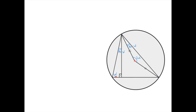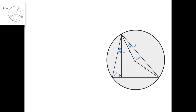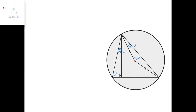Let this angle be alpha. Since this is a circumcenter, we know that this angle here is twice as much — two times alpha. We also know that this segment equals this segment because both are radii of the circle, and therefore this triangle is isosceles, which means that this angle equals this angle equals 90 minus alpha.